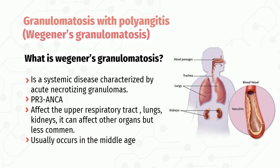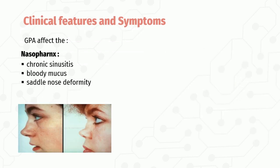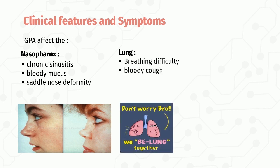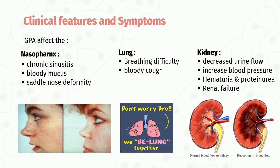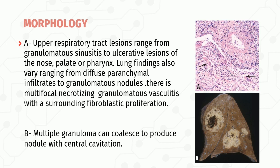Clinically, granulomatosis with polyangiitis affects the nasopharynx, causing chronic sinusitis, bloody mucus, and saddle-nose deformity. In the lungs, it causes breathing difficulty and bloody cough. In the kidneys, it restricts blood flow to the glomeruli, causing decreased urine flow and increased blood pressure; mild renal involvement may show only hematuria and proteinuria, while severe disease can progress to renal failure. Morphologically, upper respiratory tract lesions range from granulomatous sinusitis to ulcerative lesions of the nose, palate, or pharynx. Lung findings range from diffuse parenchymal infiltrates to granulomatous nodules — one image shows multifocal necrotizing granulomas with surrounding fibroplastic proliferation, while another shows multiple granulomas coalescing to produce nodules with central cavitation.